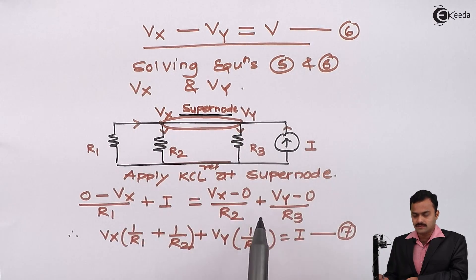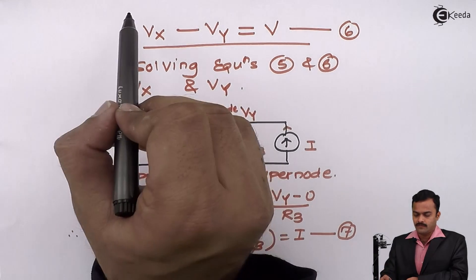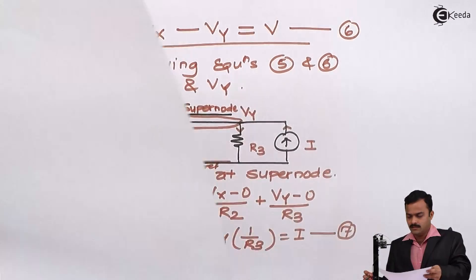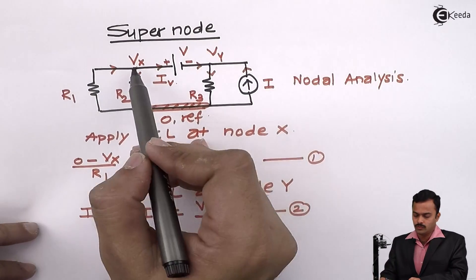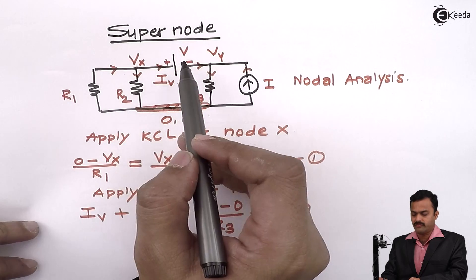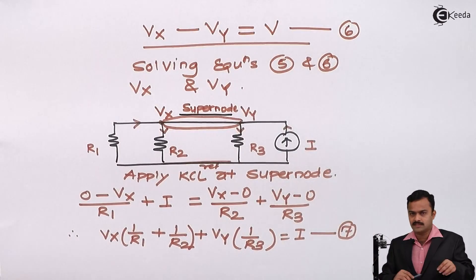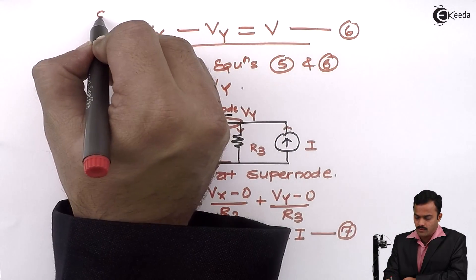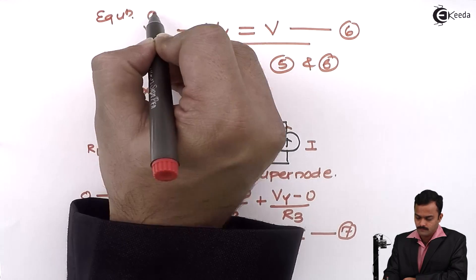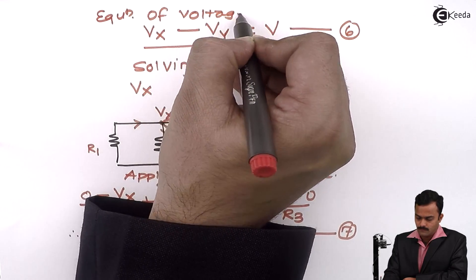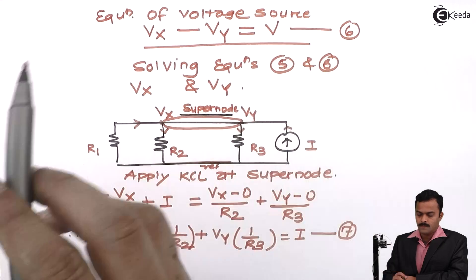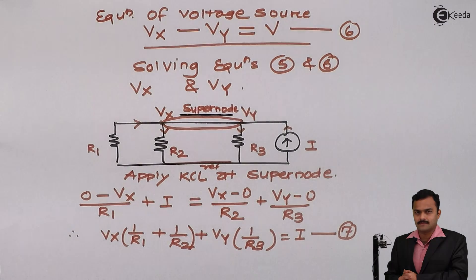And write the terms, get only one equation. And other equation you will get from this voltage source. So here voltage source is connected between two nodes. Vx minus Vy will be the V. So I will consider this as equation of voltage source. So here we have seen a concept of super node. In subsequent videos, we will solve numericals based on this. Thank you.